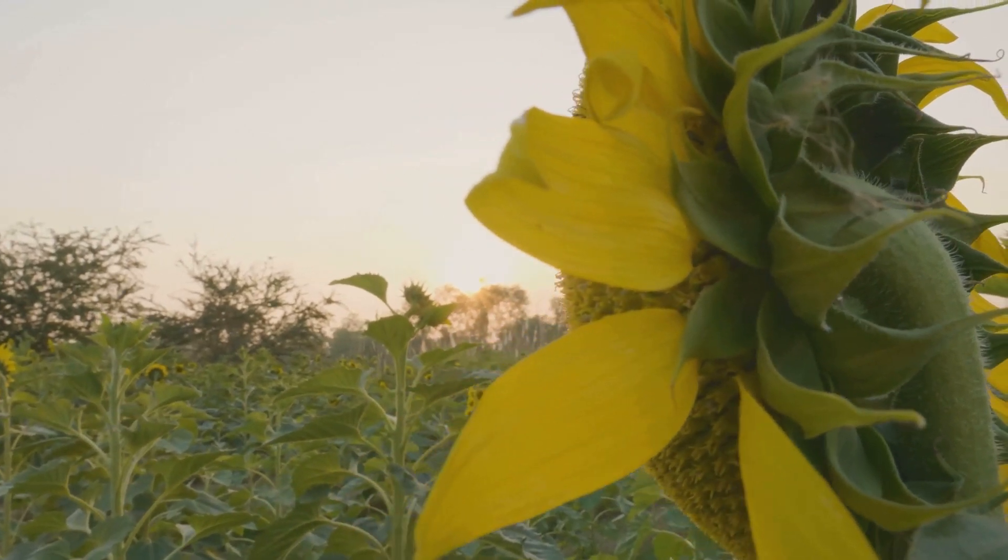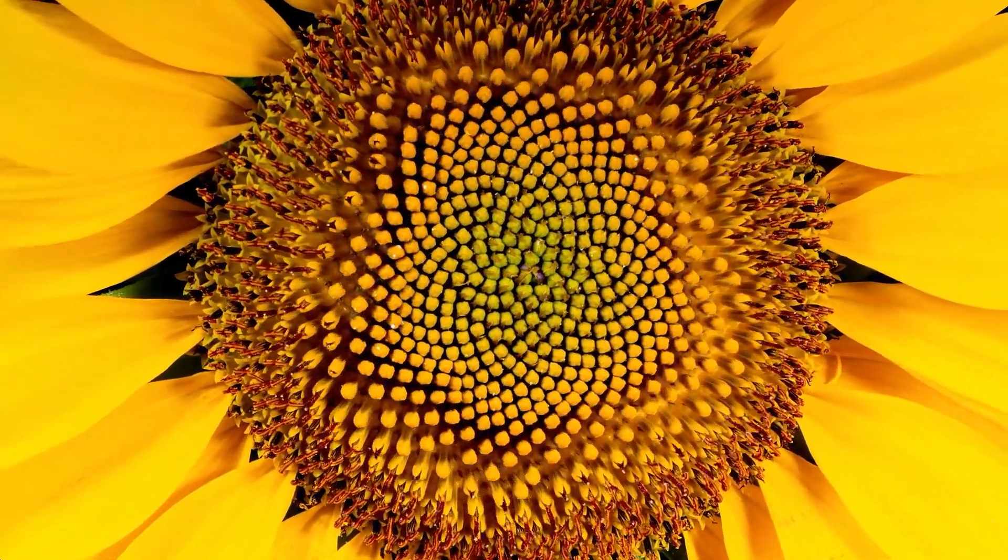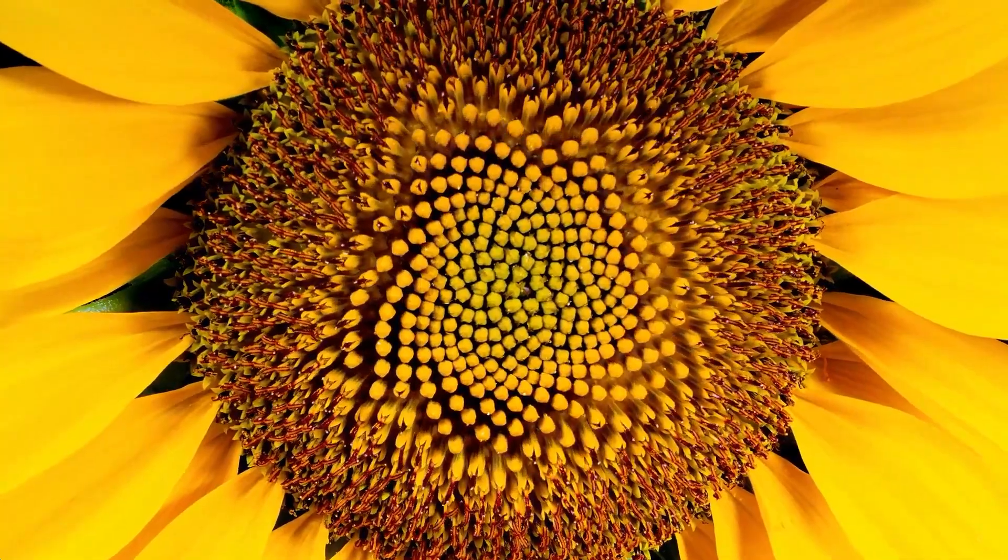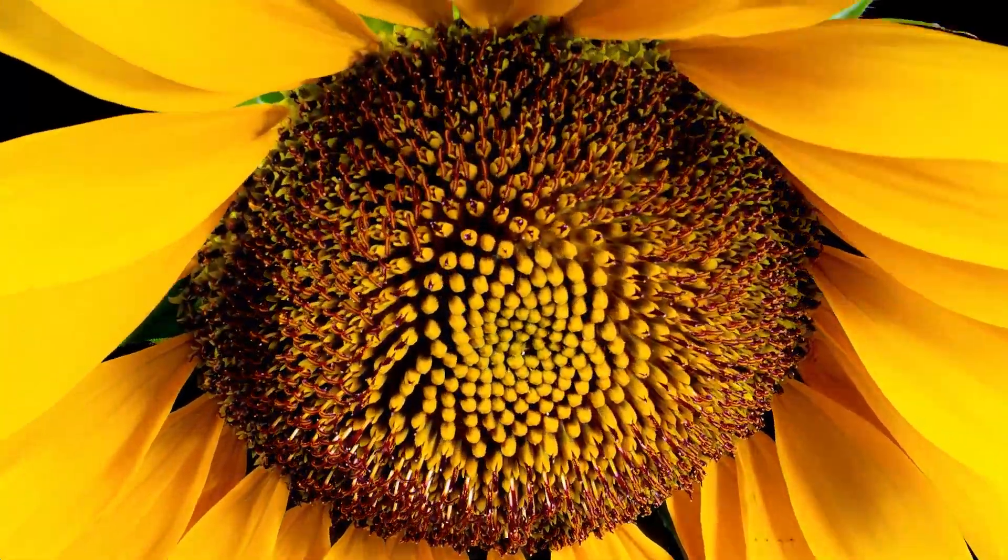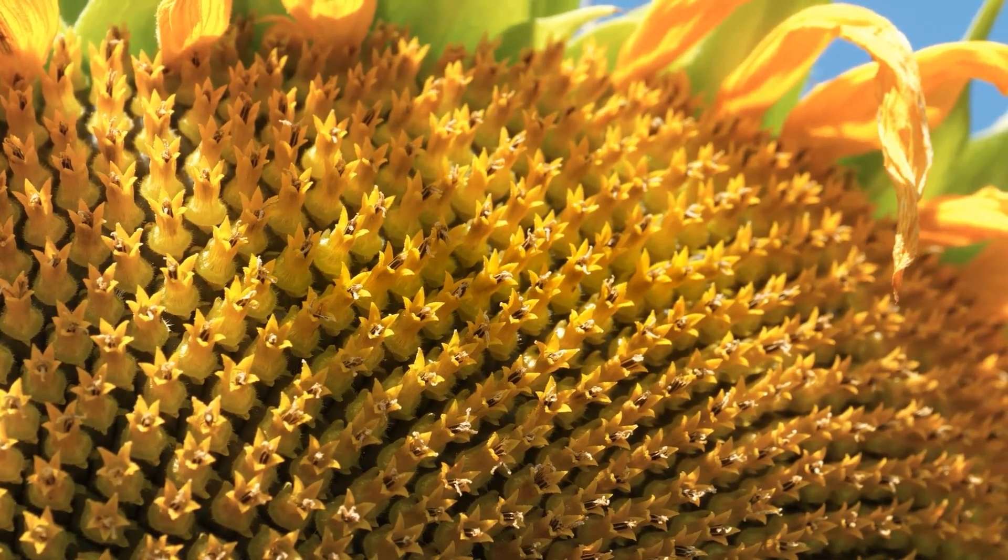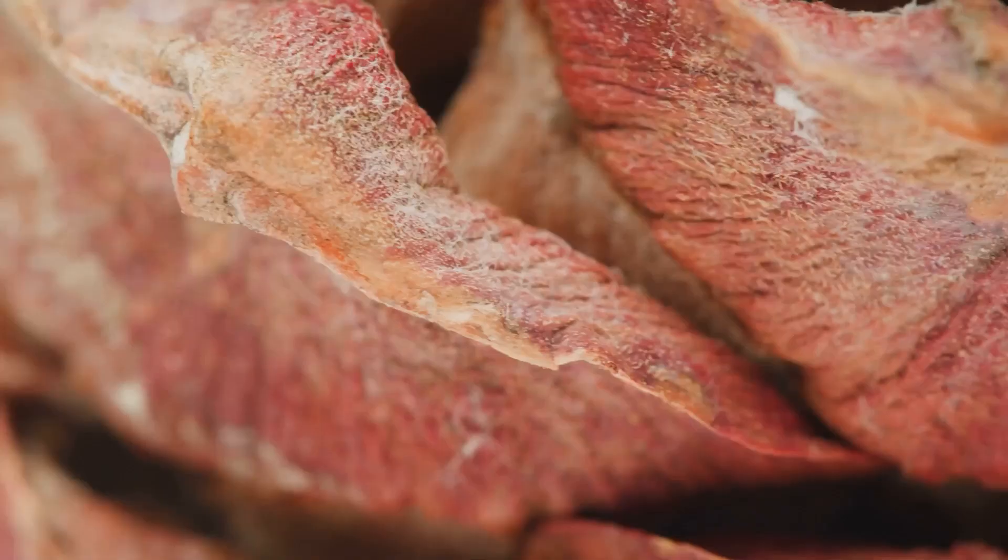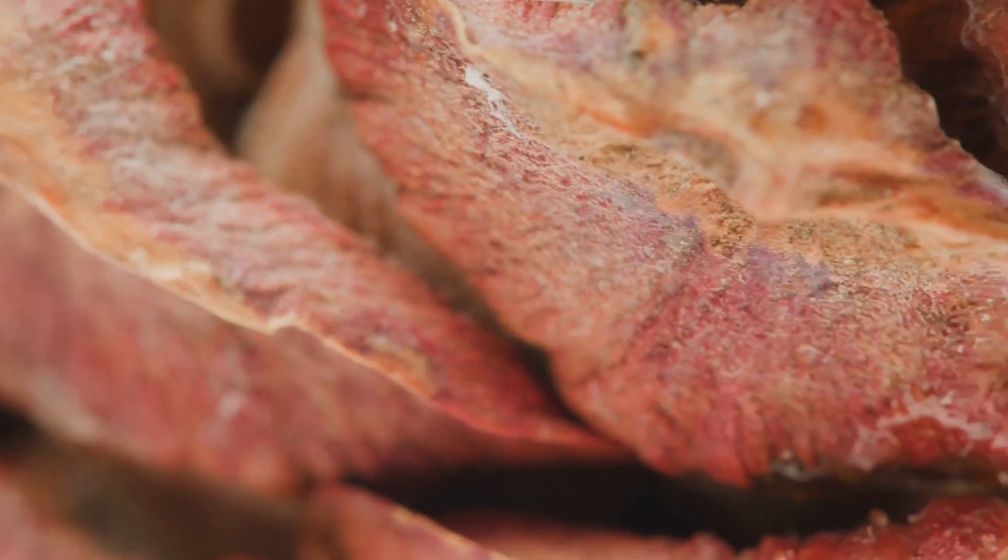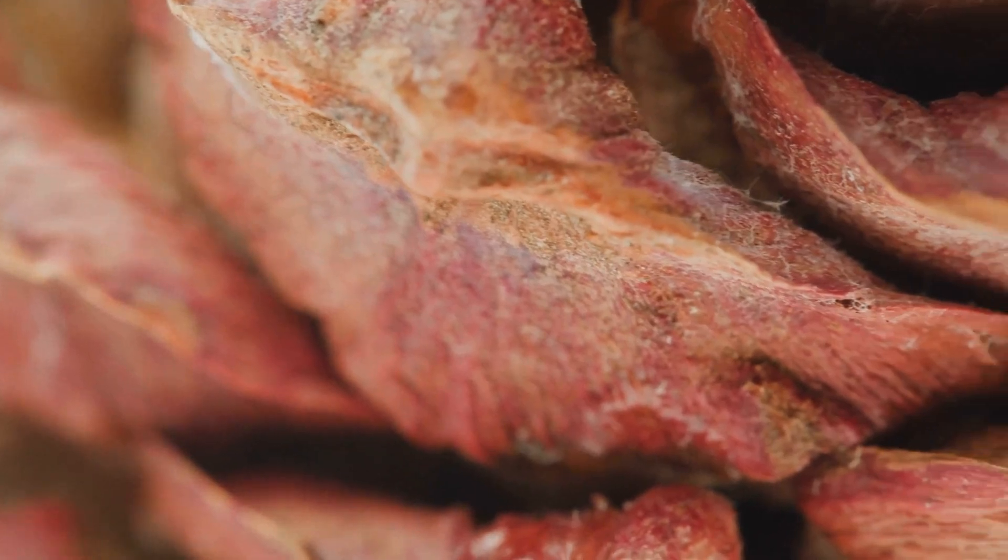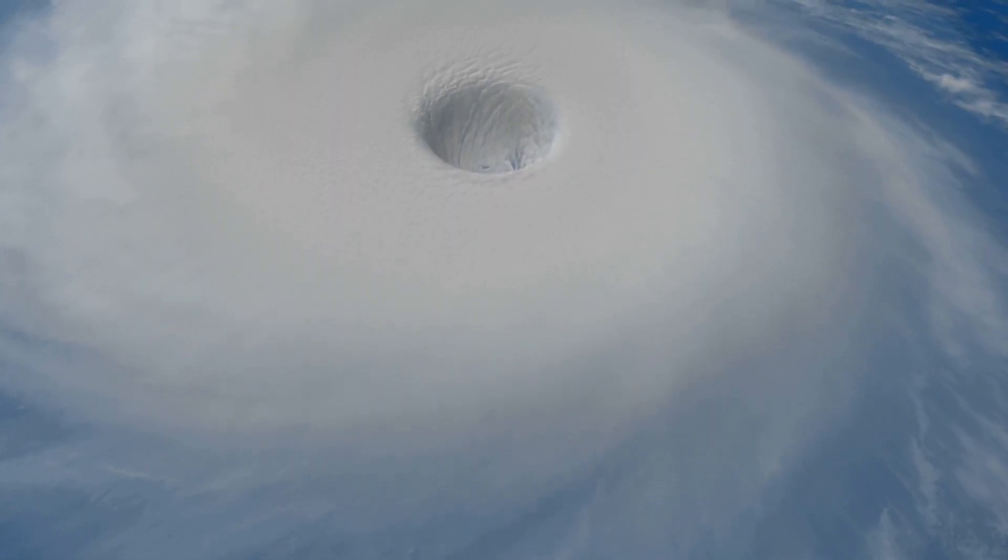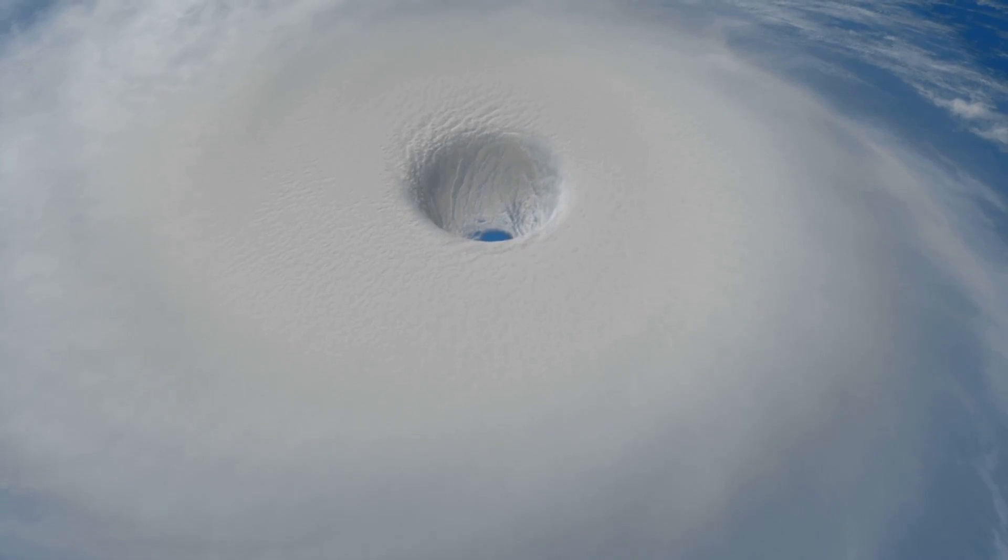Consider the sunflower. Its seeds are arranged in spirals following a precise mathematical sequence, the Fibonacci sequence. This progression, where each number is the sum of the two before it, reveals itself everywhere. The elegant spiral of a nautilus shell, the symmetry of pine cones, even hurricanes which rage in chaotic fury form spirals that echo Fibonacci's silent order.